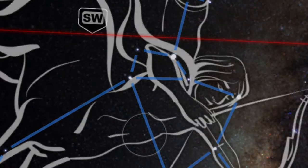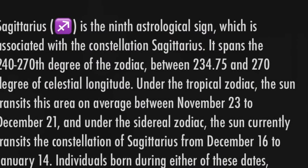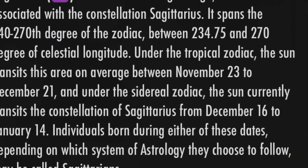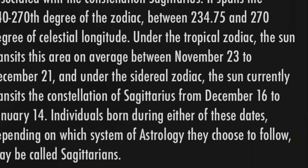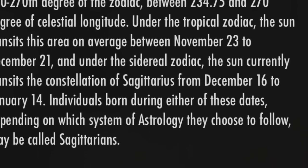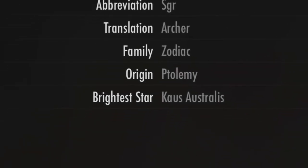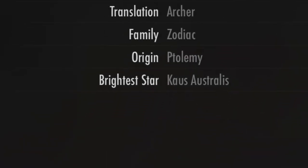Along with the illustrations, you also get background information, and if you're looking at a specific star, you can see its alignment along with other planets and different space stations.